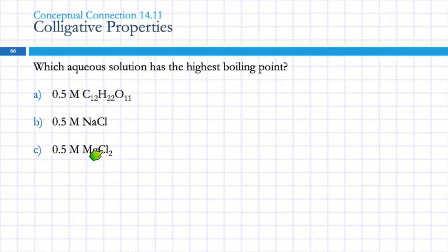Three, because there's two chloride ions and one magnesium ion. All of these have the same concentration. Which one has more particles per liter? C. That one causes the biggest change in the boiling point. If they're asking which has the lowest freezing point, that would be this one. Which has the highest osmotic pressure? That would be this one.